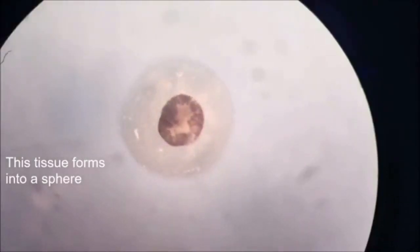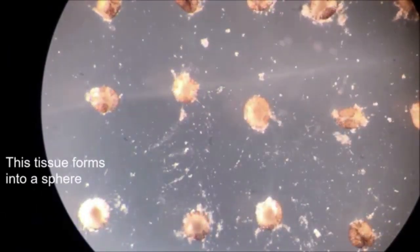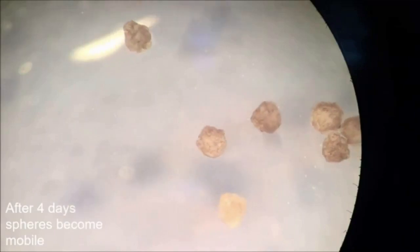and allowed them to self-assemble and grow into spheroids, where some of the cells, after a few days, differentiated to produce cilia—tiny, hair-like projections that move back and forth or rotate in a specific way.